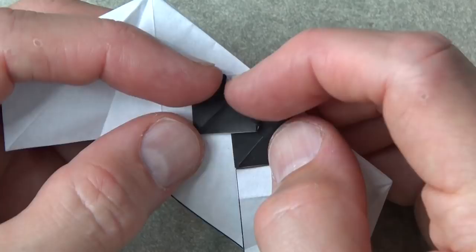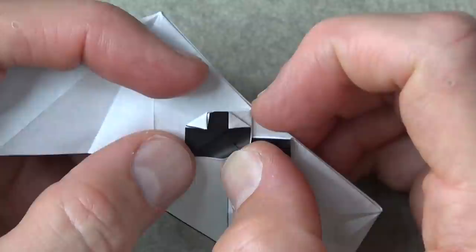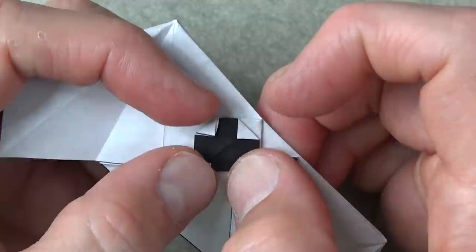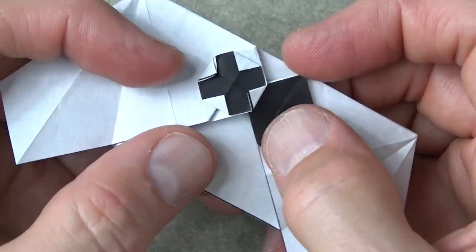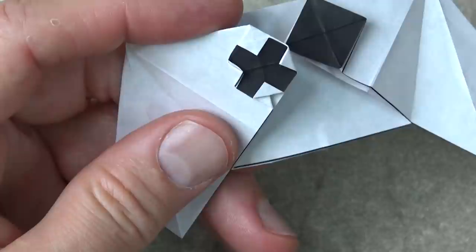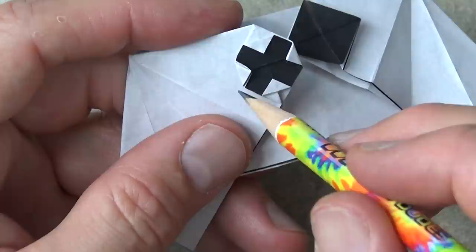And repeat on these two corners. Like that. Now make a fold that goes between this point and this point. It's a mountain fold.